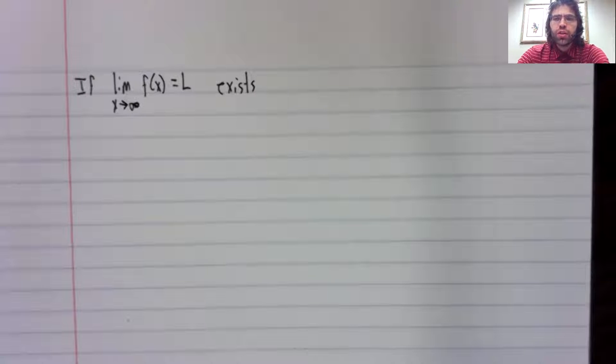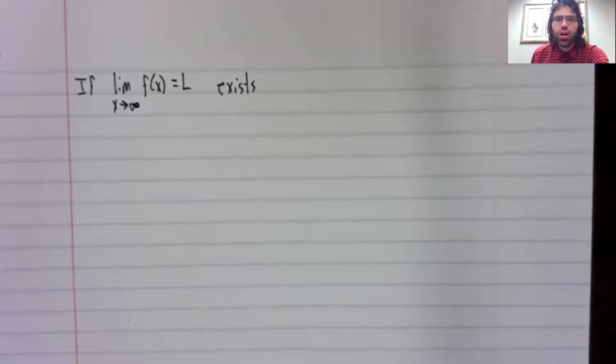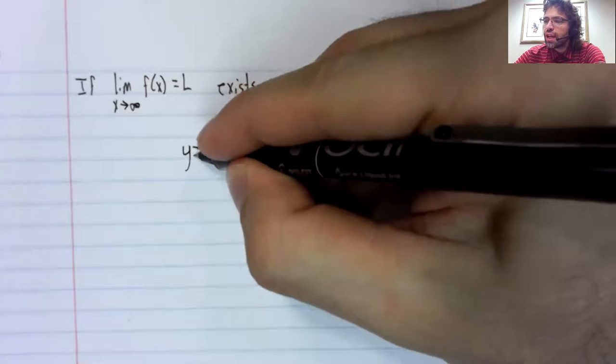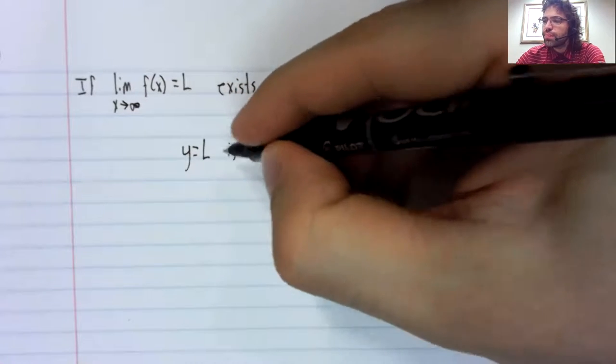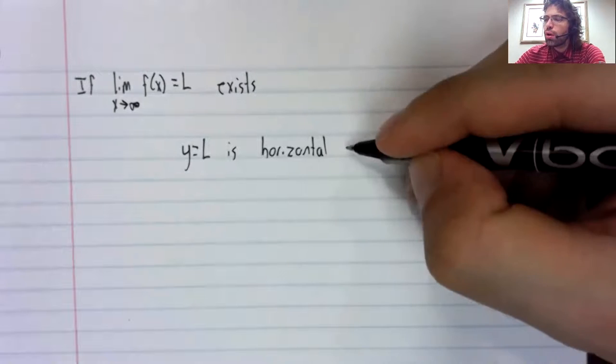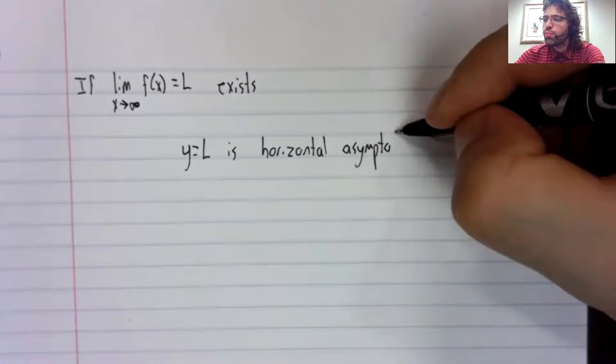and I should say, by the way, that's a big if. Most standard functions don't have these limits, but if the limit does exist, then that limit is a horizontal asymptote.